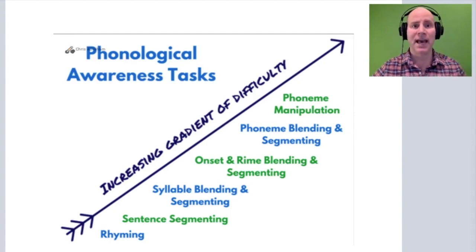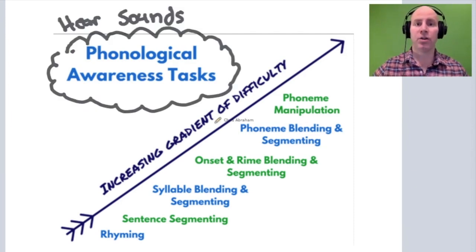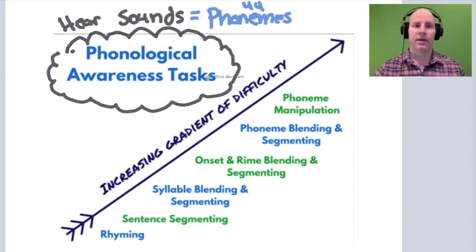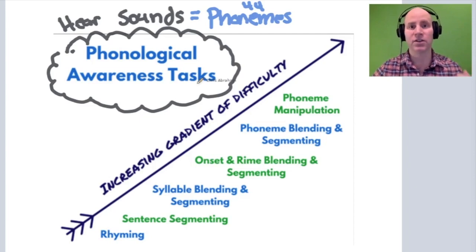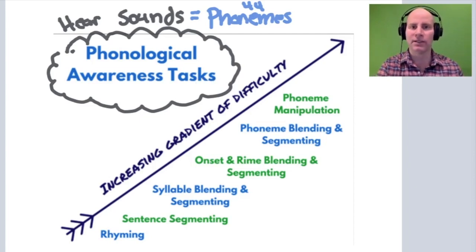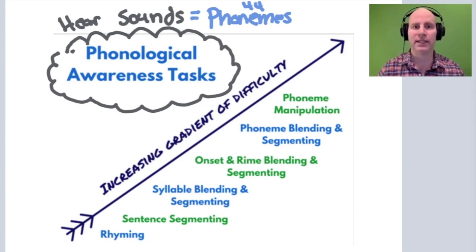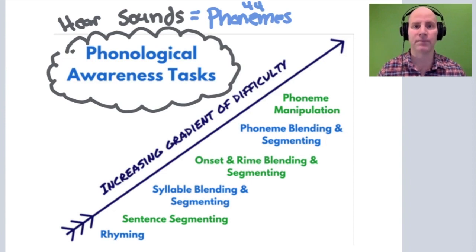Phonological awareness has to do with the ability to hear sounds, and we call those sounds phonemes. In English there are 44 phonemes. You're going to have a lot of questions involving phonological awareness and whether a child or preschooler can hear the sounds in the English language, because we know that hearing the sounds is going to help with decoding and encoding activities — it's a fundamental building block for literacy development.